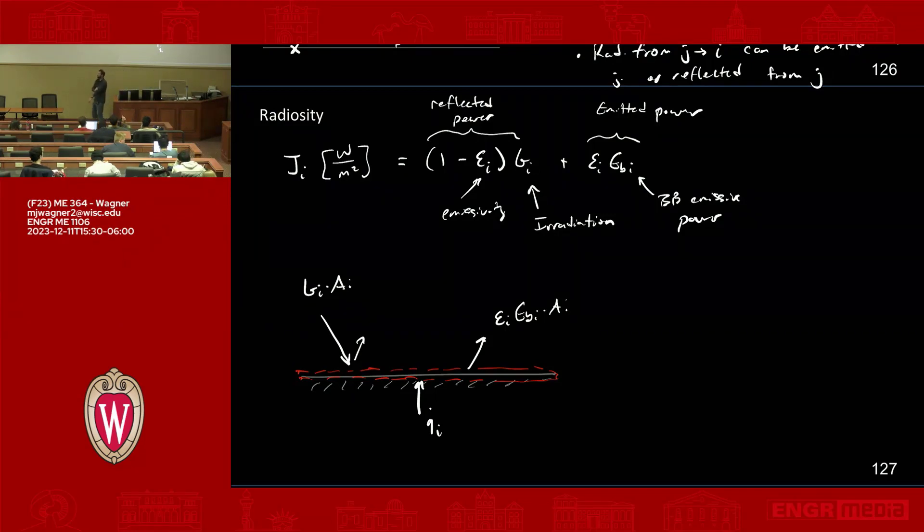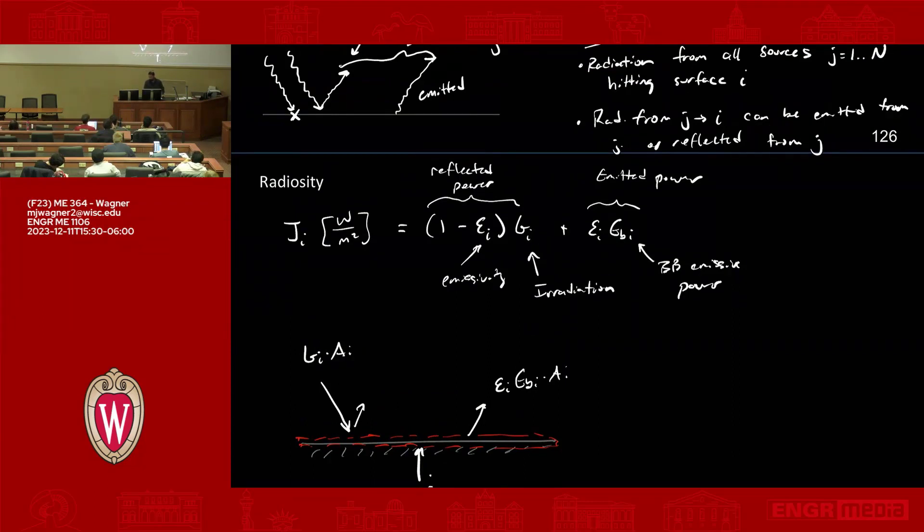Question? Yeah. Why does the reflected power term not include transmissibility? It would have to, so let's see what we would have to do is somehow modify this equation. Let me step back. So what the radiosity equation is capturing is the total light that's leaving this surface, surface i. So if we formulate it in this way where we say the amount that's leaving is equal to one minus emissivity, that's assuming that there's no transmissivity component because theoretically it could be what's absorbed, what's transmitted, and then the absorbed part is going to have to be re-emitted.